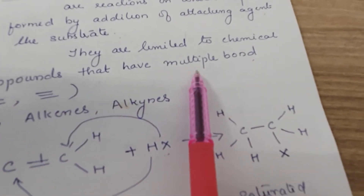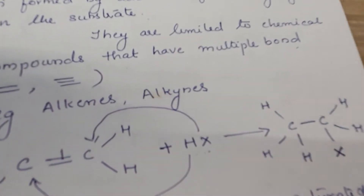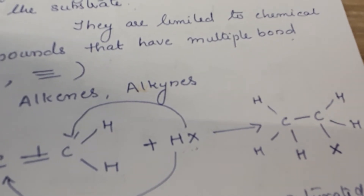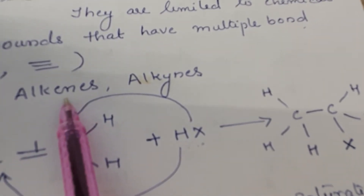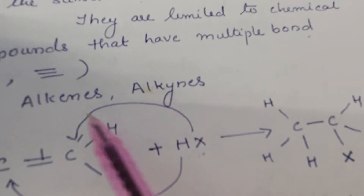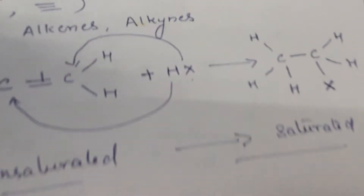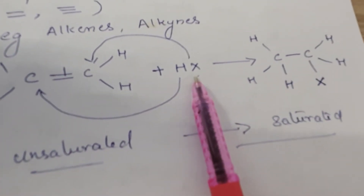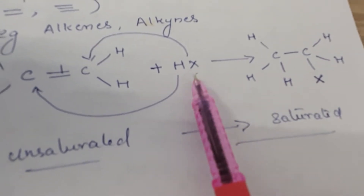An important condition: the substrate must be a compound with a multiple bond — that is, a double bond or a triple bond. Alkenes are a group of compounds having a double bond; alkynes have a triple bond. Both types of molecules can give addition reactions. For example, ethylene is a molecule that undergoes addition.